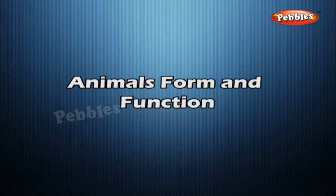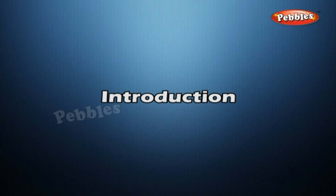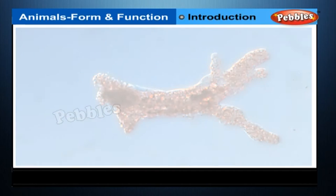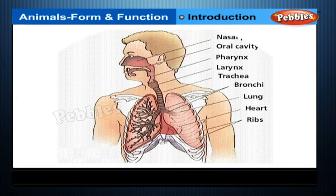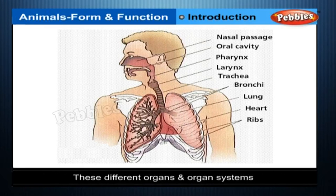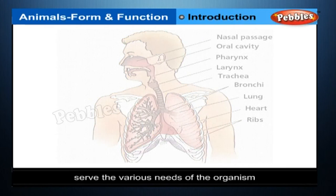Animals: Form and Function. In different groups of animals, from unicellular organisms like amoeba to human beings, there is a progressive increase in the complexity of body organization. A series of organs and organ systems have developed. These different organs and organ systems serve the various needs of the organism.